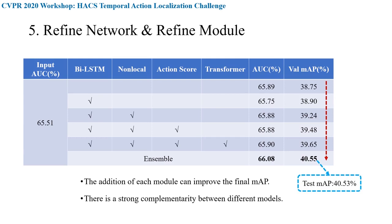The original BMN directly uses a sample matrix to sample all features of proposals end-to-end. Limited by computation and memory, the sampling rate will not be too high, and some temporal features will be lost. The refine module directly samples from the temporal features using proposals. Although efficiency is not high, it obtains more fine-grained sampling than BMN, which is very helpful for action localization. The higher-level fusion of features in the temporal dimension has also been greatly improved.